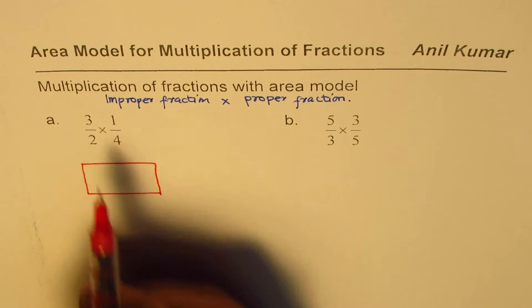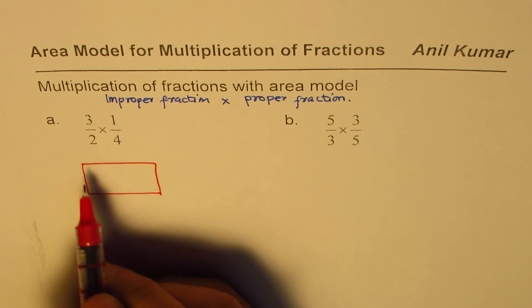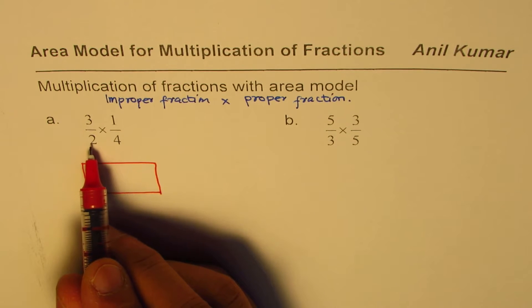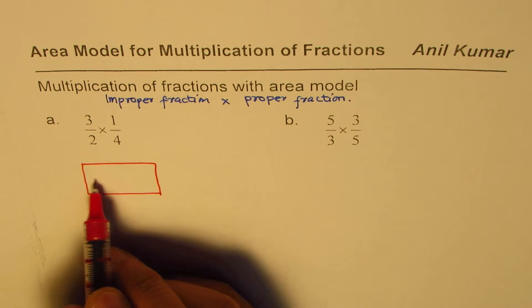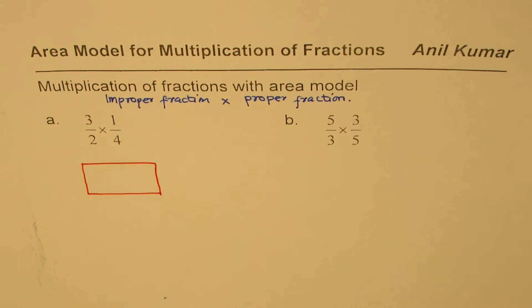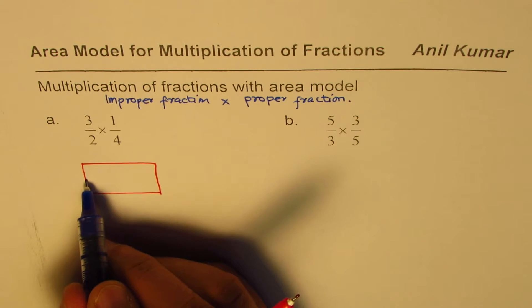Now, when we write 3 over 2, we will divide this rectangle into halves and then take three halves. But if you divide one rectangle into halves, you cannot take three halves. So what do you have to do? You have to at least take two rectangles. That is the whole idea.